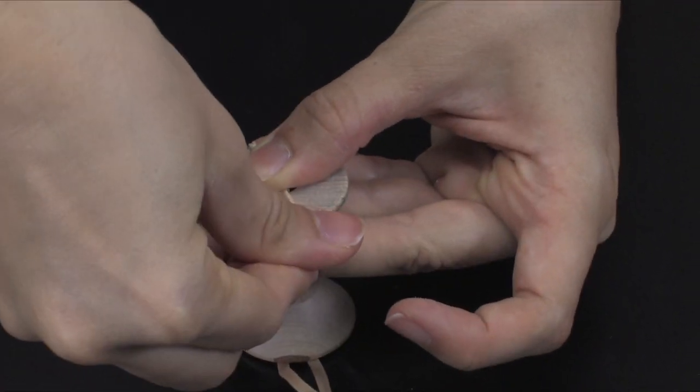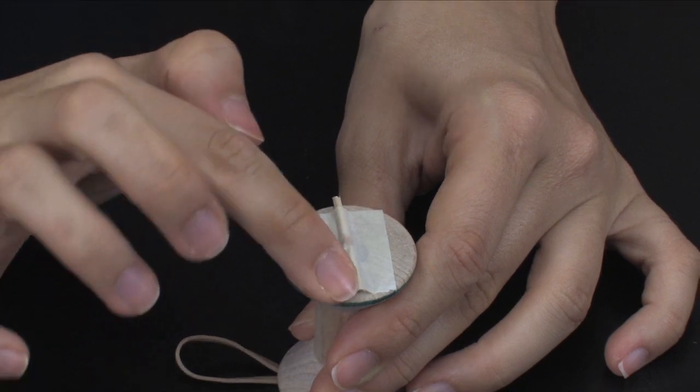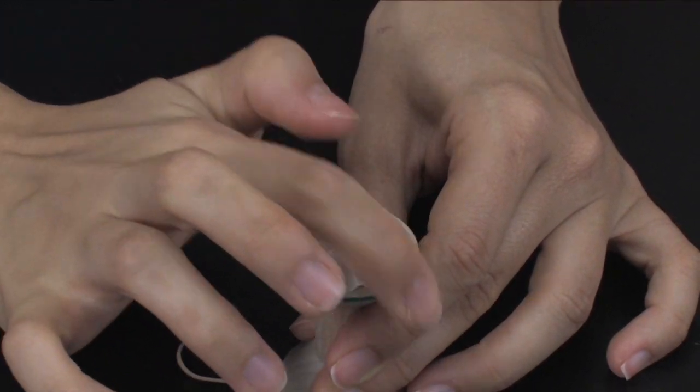Students will break off the ends of the toothpick so that they do not hang over the edge of the spool. They will cover the toothpick with a small piece of tape so that it will stay in place.